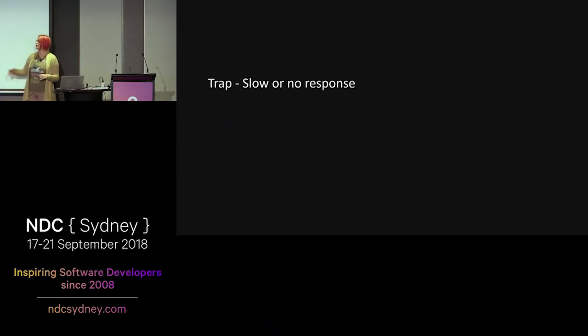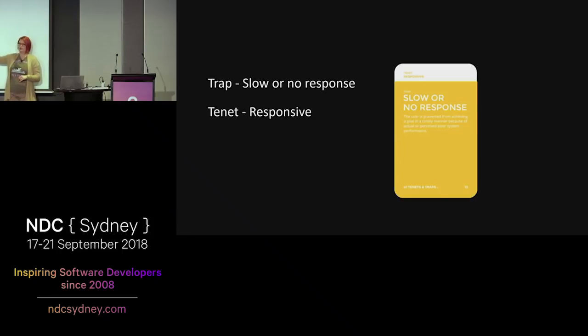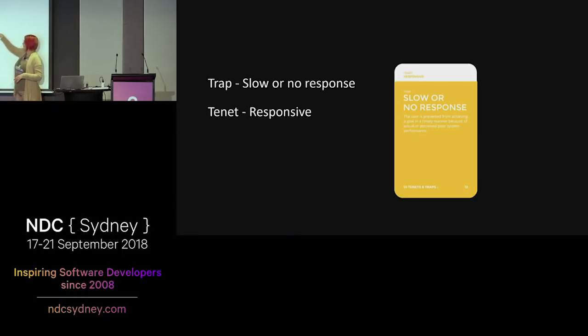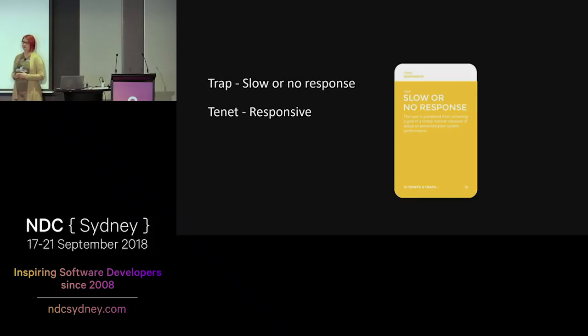Tenets and Traps are also related to each other — all the Tenets have Traps that will degrade them. For example, if someone says about your app that it's slow or doesn't respond, the trap will be 'slow or non-responsive' and it will degrade the Tenet 'responsive.' This is the card for it — up here it says 'responsive,' that's the Tenet. Here it says the Trap is 'slow or non-responsive' and you can read a description. And if you flip the card, you get a real-life example. So that is really, really clear.